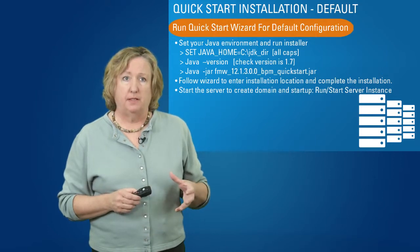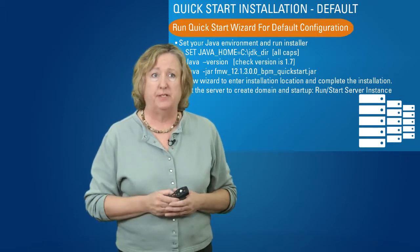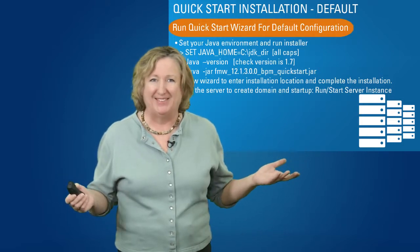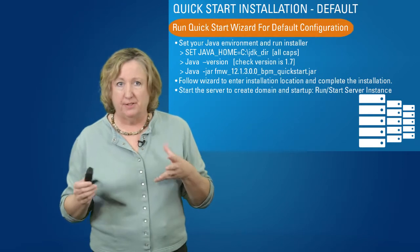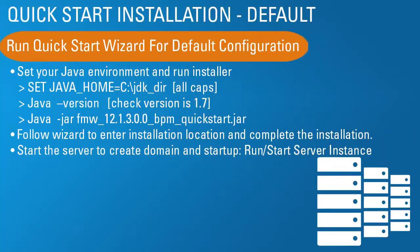After you've decided which option you want, you go ahead and do the install. For the default configuration, you set your Java environment and run the installer. Set your Java home — the environment variable has to be all caps — then check your version with 'java -version', making sure you're pointing to Java 1.7. Then run 'java -jar' followed by the name of the jar file. If there are multiple jar files when you unzip your download, just point to the first one and it will find any additional ones it needs. The wizard comes up, you specify your installation location, click next, it installs, and you're done.